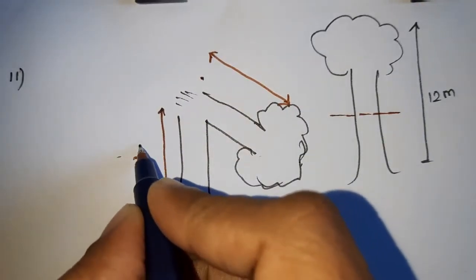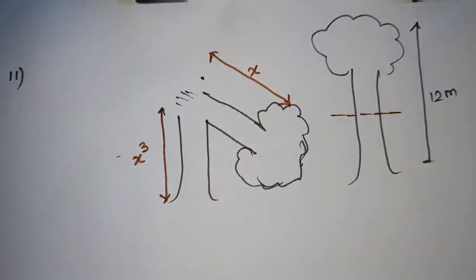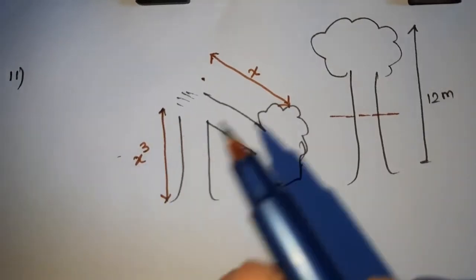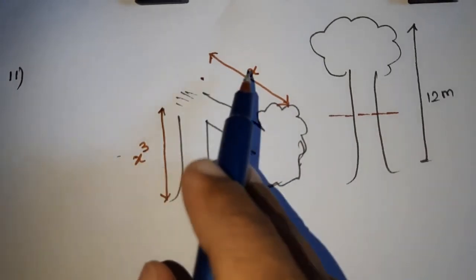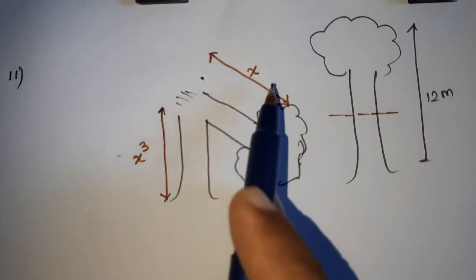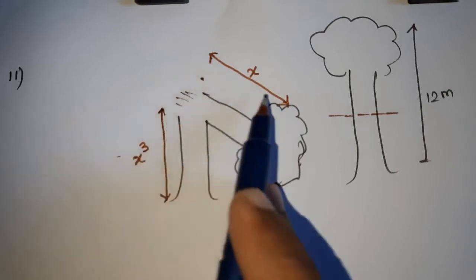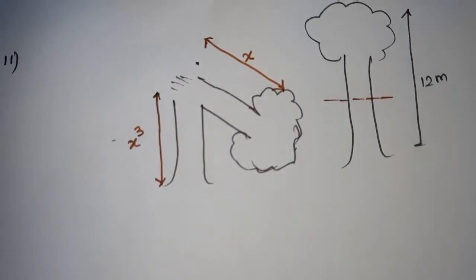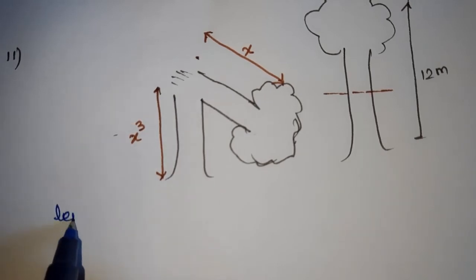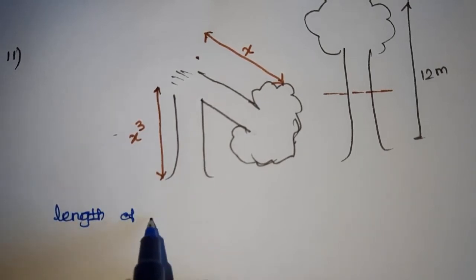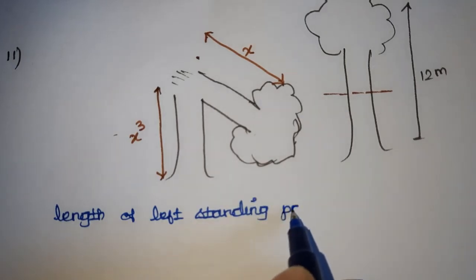Suppose we let x be the left standing part. So x is the cube root of the cut away part. Therefore, the cut away part has length x cubed. The left standing part is x and the cut away part is x cubed.